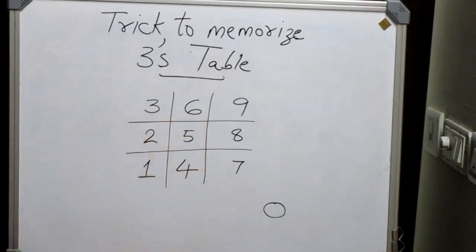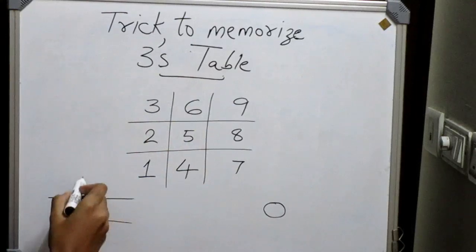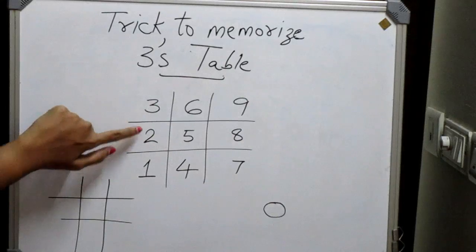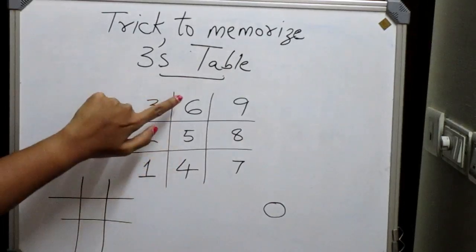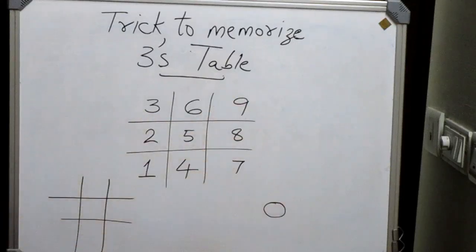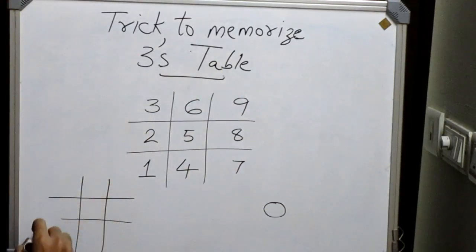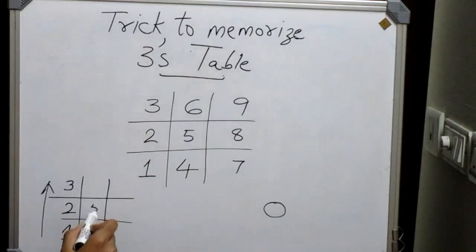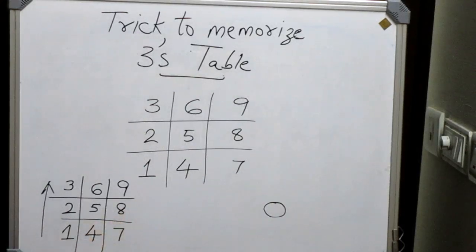You create two lines like this and start writing 1, 2, 3, 4, 5, 6, 7, 8, 9, and the 0 of 10 outside the matrix. How will you write? From the bottom upward direction. Write 1, 2, 3, then again from the bottom 4, 5, 6, again from the bottom 7, 8, 9, and the tens digit 0.